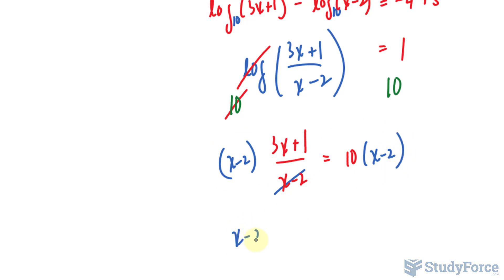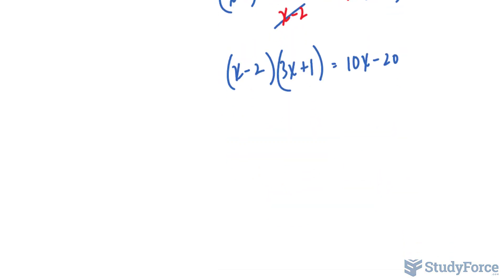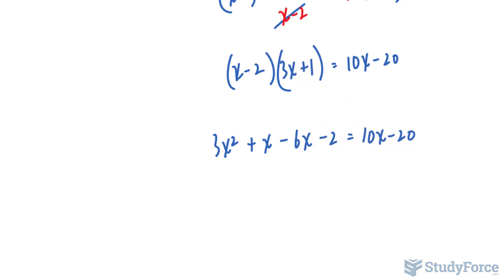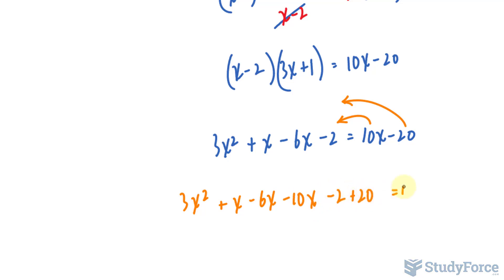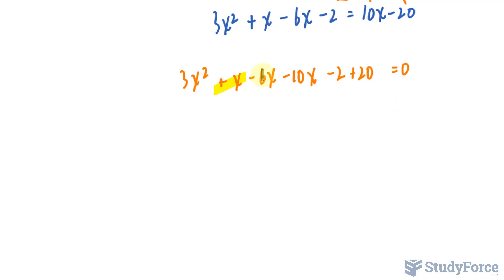To isolate for x, I'll multiply both sides by (x minus 2), giving me (x minus 2)(3x + 1) on the left and 10x minus 20 on the right. I suspect I'll be getting a quadratic from here. Expanding: 3x squared, plus x, minus 6x, minus 2 equals 10x minus 20. I'll group together all the like terms: 3x squared plus x minus 6x minus 10x minus 2 plus 20 equals 0.